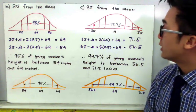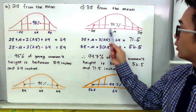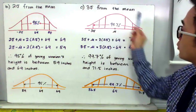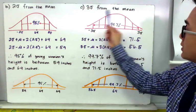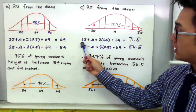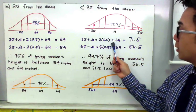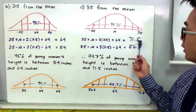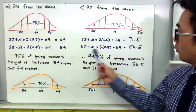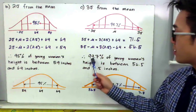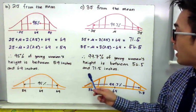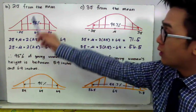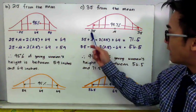For the last range of values, we are now looking at 3 standard deviations away from the mean. The upper limit is 3 times 2.5 plus 64 inches, which gives us 71.5 inches. For the lower limit, 3 standard deviations minus the mean gives us 56.5 inches. Therefore, 99.7% of young women's height is between 56.5 inches and 71.5 inches.